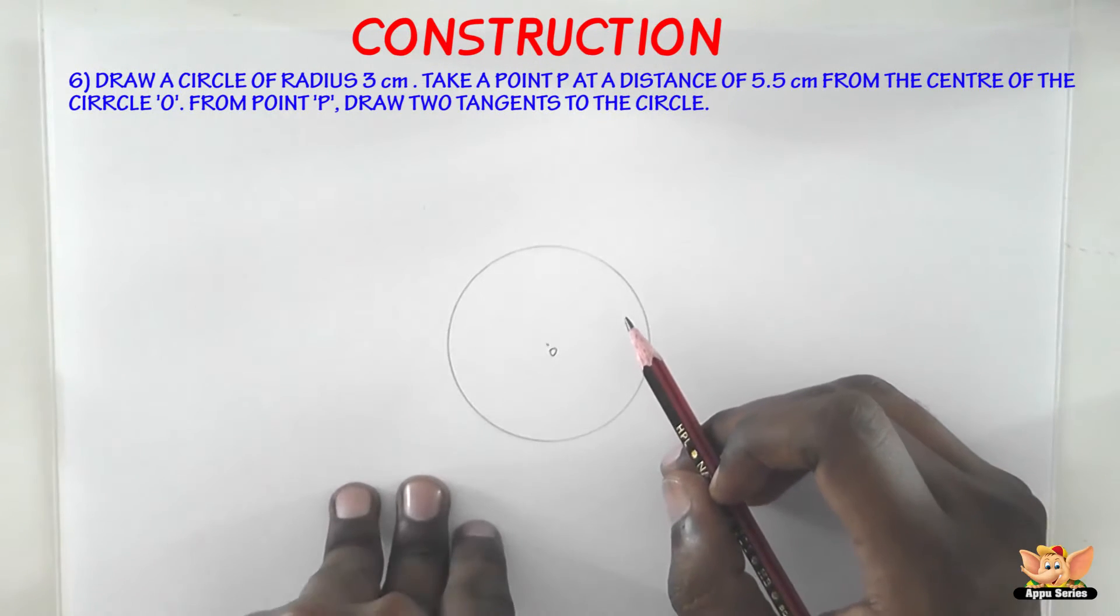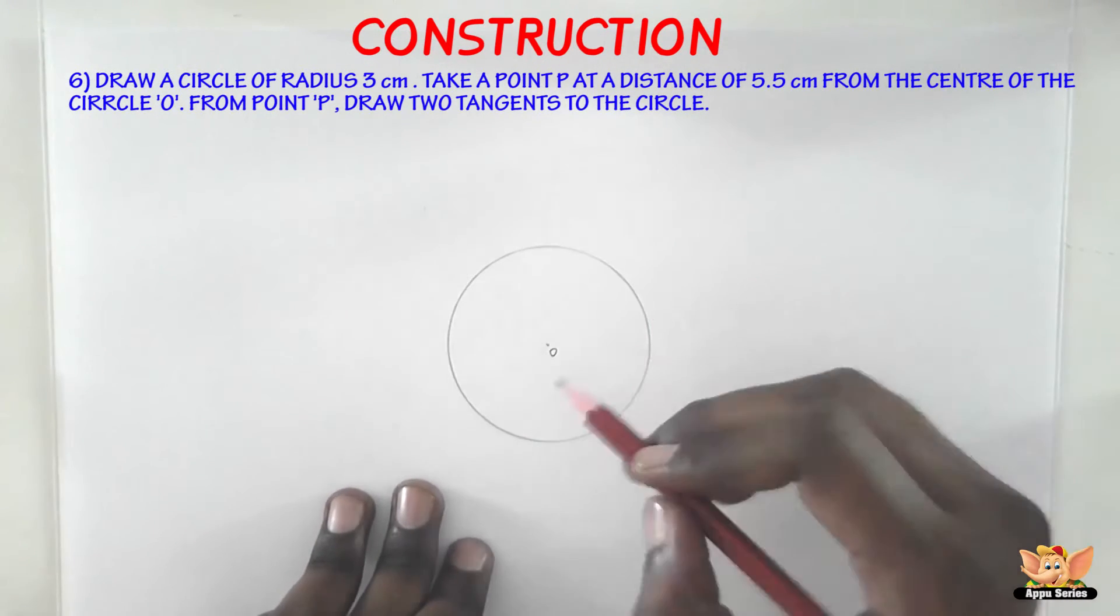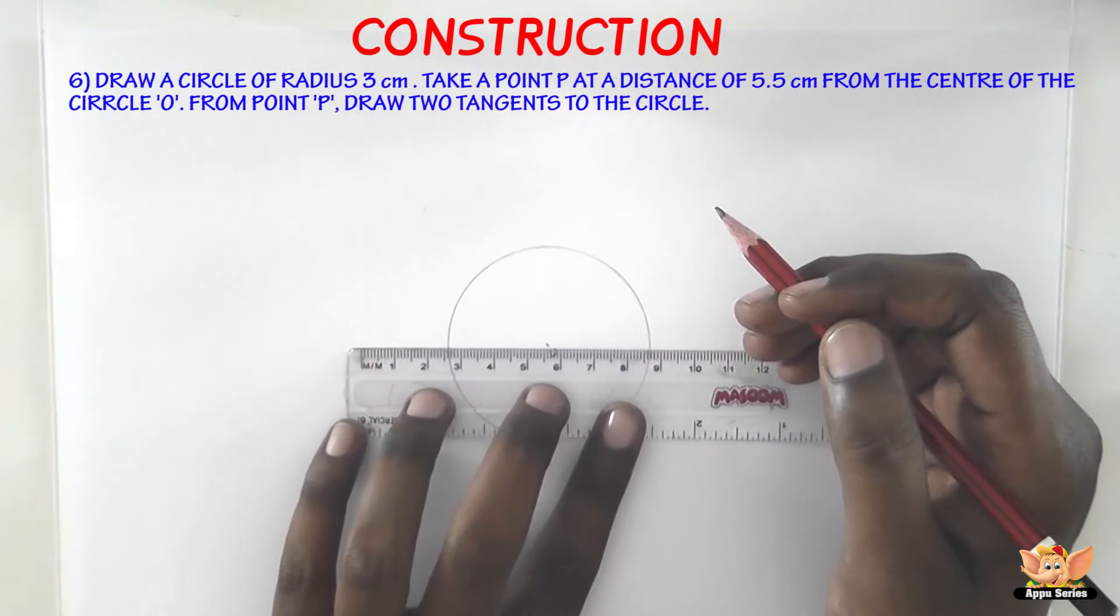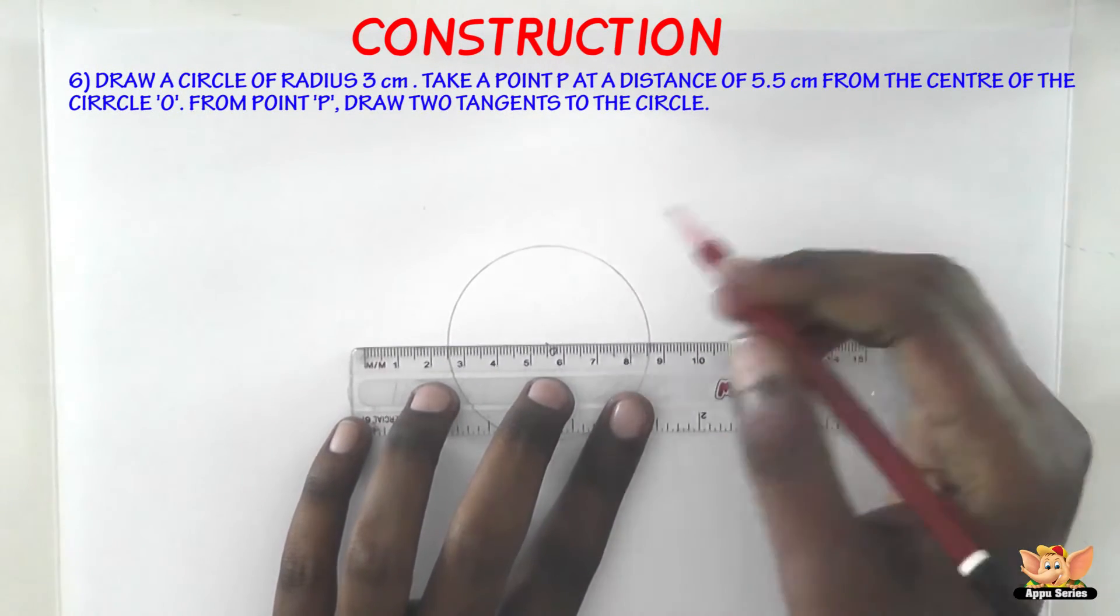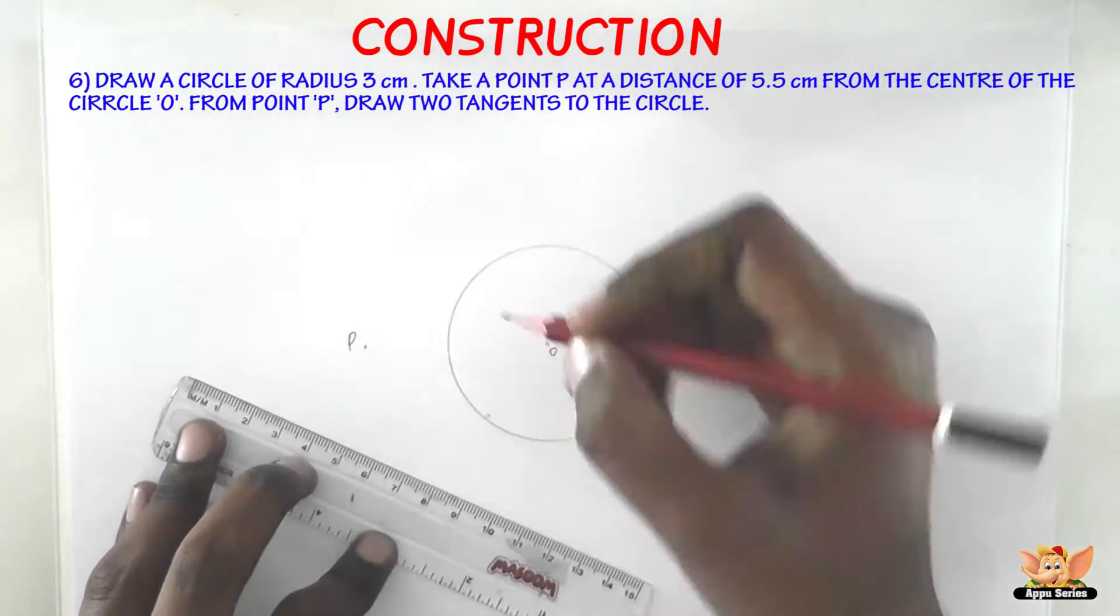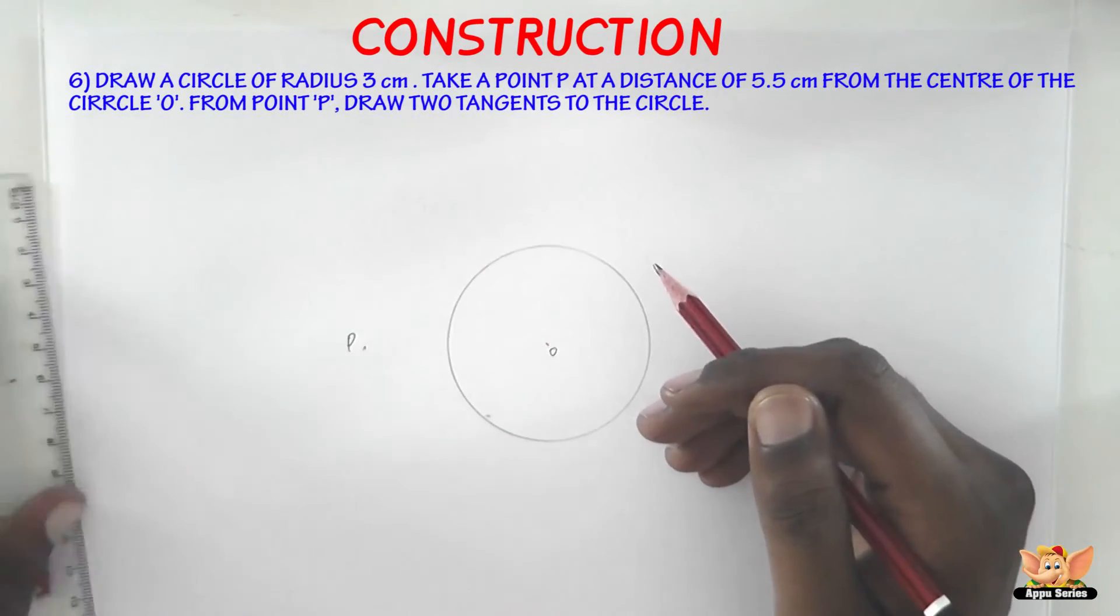Now take a point at a distance of 5.5 cm from the center of the circle. From here we need to take a distance of 5.5 cm. So 5.5 cm is going to be exactly so much. So let's take this point then. So this point is going to be called P. OP is going to be 5.5 cm.